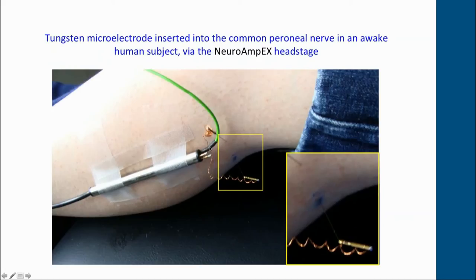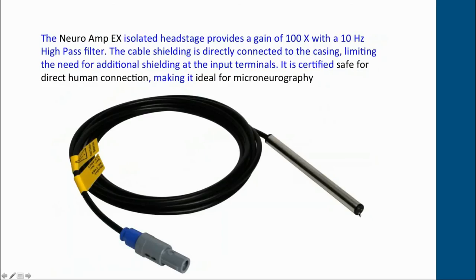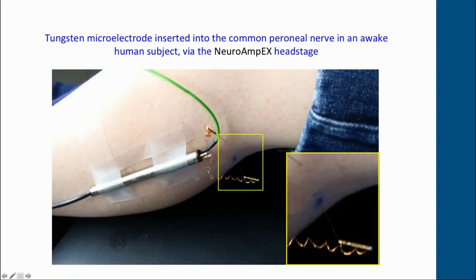The green lead is attached to a simple silver-silver chloride surface electrode — just a stick-on ECG electrode over the knee or anywhere nearby. There are two electrode terminals. One is a ground lead and, as this is a differential amplifier, one input is positive and the other is negative. We have a microelectrode inserted into the common peroneal nerve. The blue mark simply indicates the site over the nerve defined as the best site for inserting.